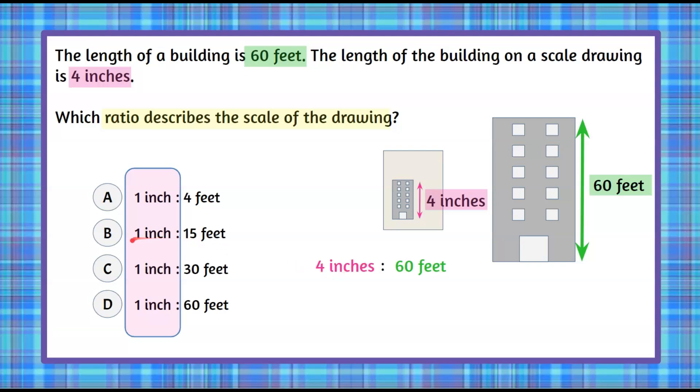So to simplify to get one inch, we're going to divide this by four. What we do to one side of the ratio, we must do to the other. Four divided by four gives us one inch. And then we have 60 divided by four, which is 15 feet.